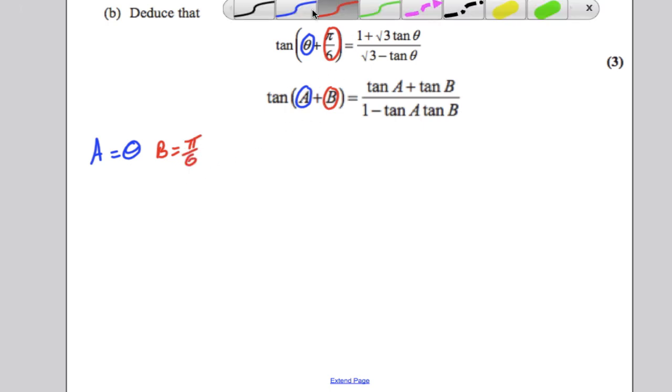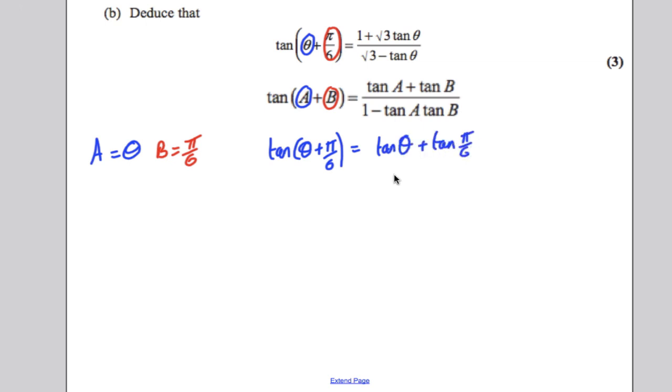And we're going to use this formula here. So therefore, tan of theta plus pi by 6 must be equal to tan theta plus tan pi by 6 over 1 minus tan theta tan pi by 6. Simple for the first mark. Now, type tan pi by 6 in your calculator when your calculator is in radians mode and you get root 3 over 3.